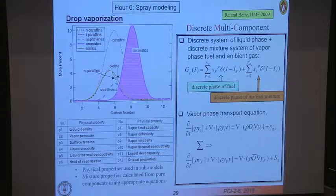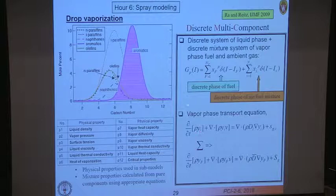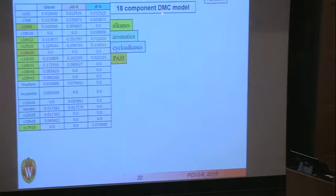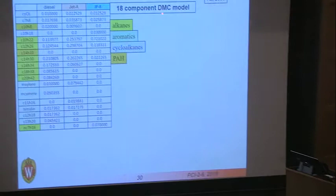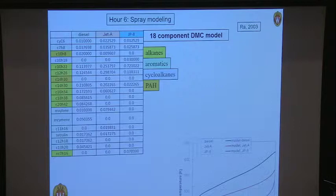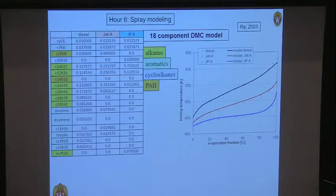Instead of solving for the entire collection of species, we have a reduced number, solving a vapor phase transport equation for each — one equation for toluene for aromatics, and so on. An example is our 18-component discrete multi-component model. The yellows are alkanes, greens are aromatics, blues are cycloalkanes, and larger molecules are PAHs. We can match the distillation curve of fuels such as diesel, Jet-A, and JP-8 — boiling temperature versus evaporation fraction tells you which species vaporize at which temperature.